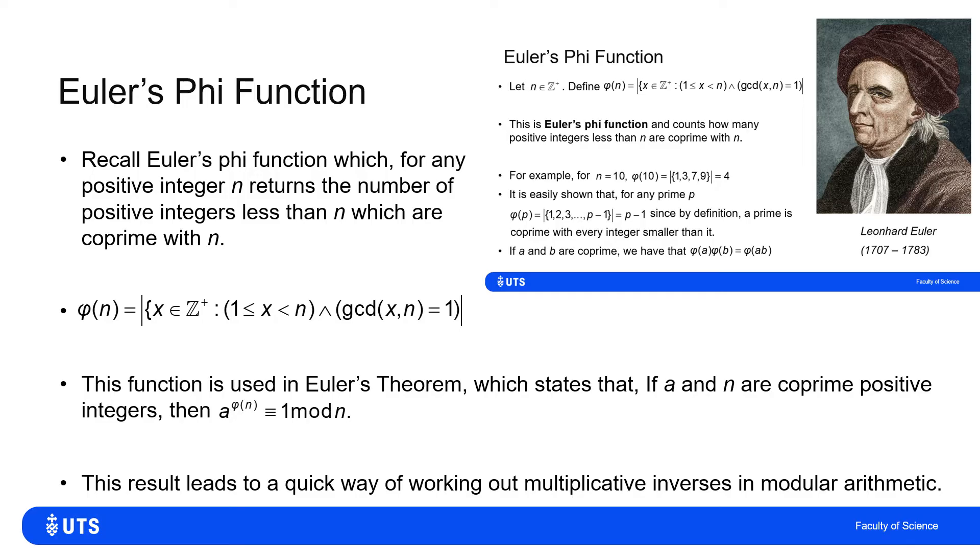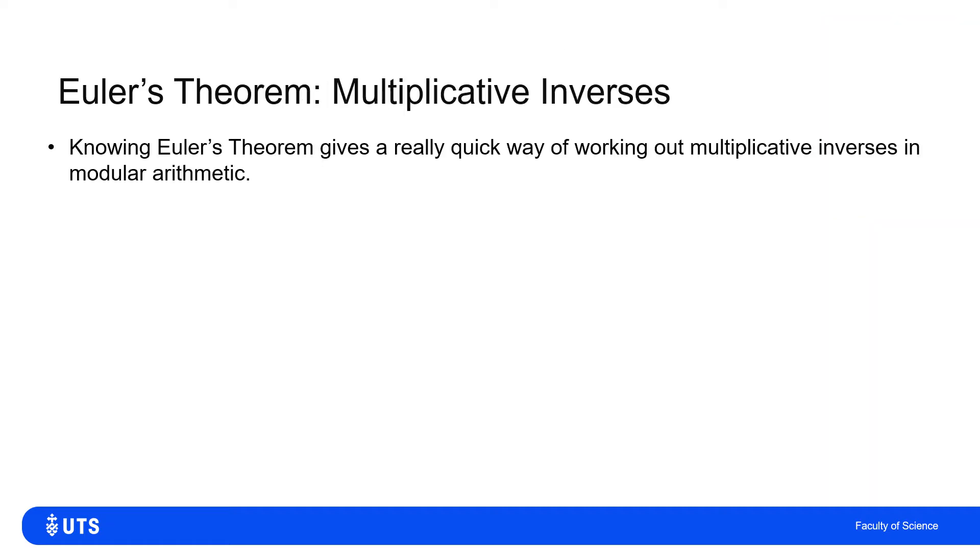Now, what this actually also gives us is a quick way of working out multiplicative inverses in modular arithmetic. So how does Euler's theorem give us this quick method for multiplicative inverses?